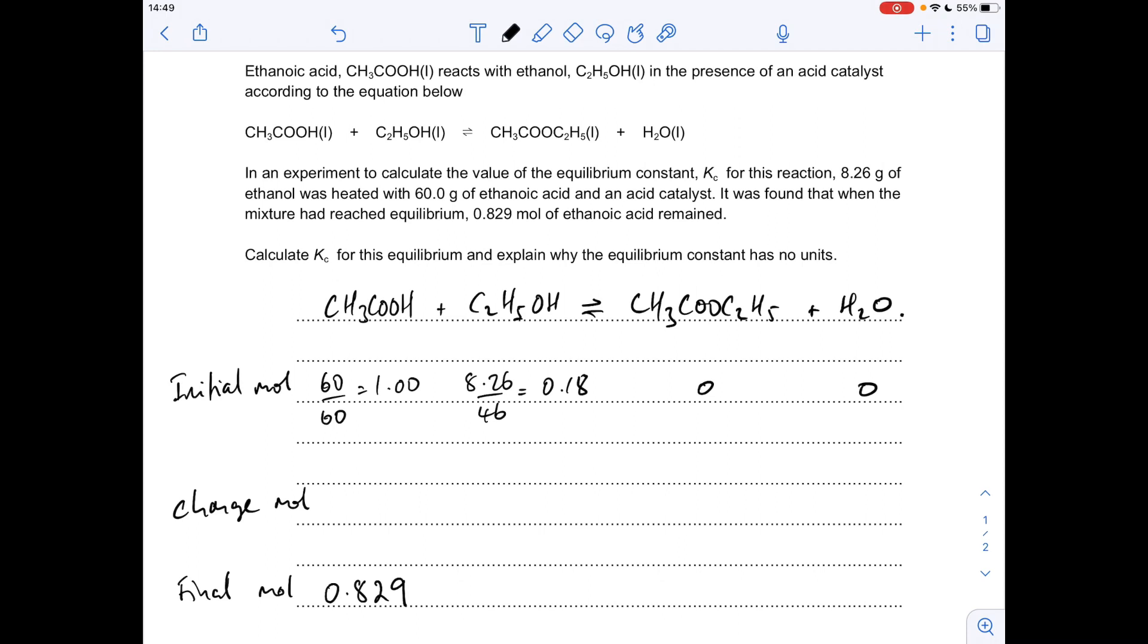There's been a change in moles of ethanoic acid of 1 minus 0.829, which is minus 0.171. Now because the mole ratio is 1 to 1, there's going to be the same amount of ethanol that will react, so that's going to go down by 0.171. Still a 1 to 1 ratio in the products, so we're going to go up from 0 to 0.171, and likewise with the water.